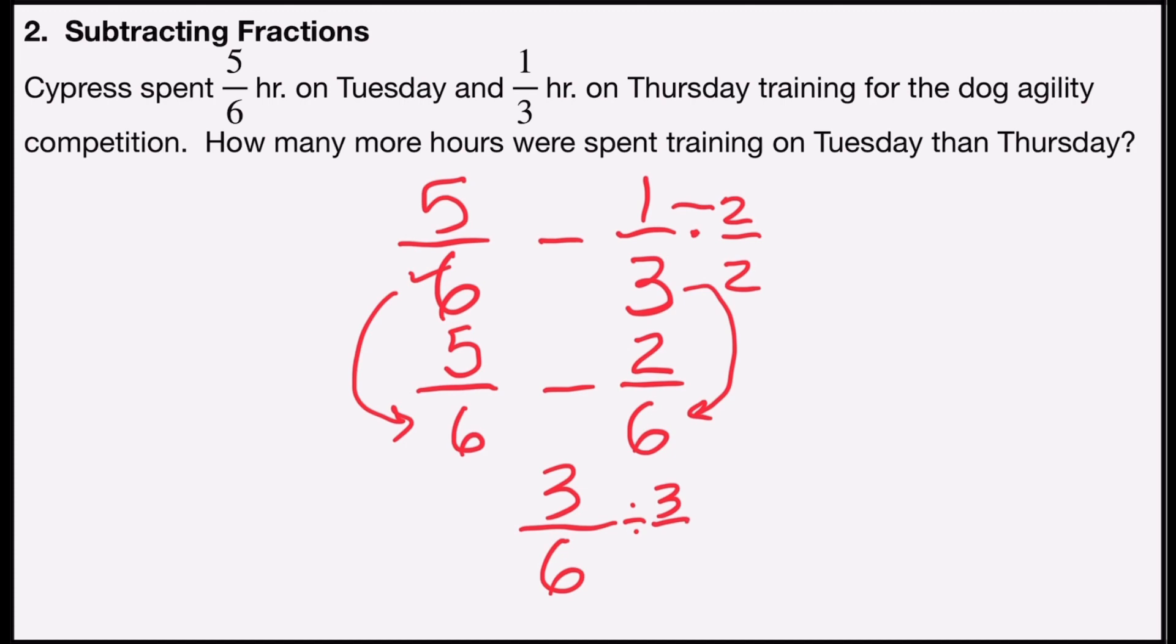So I'm going to reduce it by the form of one, 3/3. So three divided by three is one, and six divided by three is two. And so I know that Cypress spent a half hour more training on Tuesday than on Thursday.